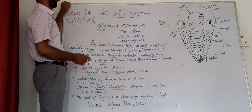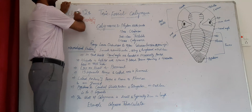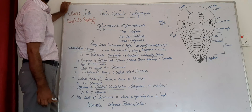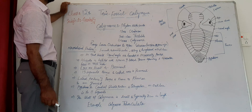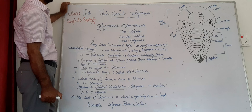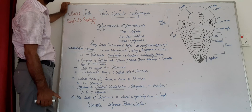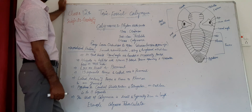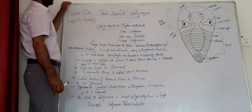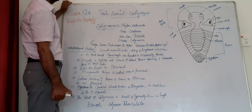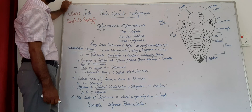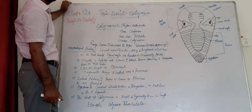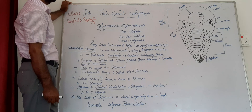Today's class is on the subject of geology and the topic is fossil Calymene. As you have already understood, regarding the paleontology unit in our course, in paleontology we have discussed Trilobita, Lamellibranchea, and Brachiopoda — these three main fossils we have discussed.